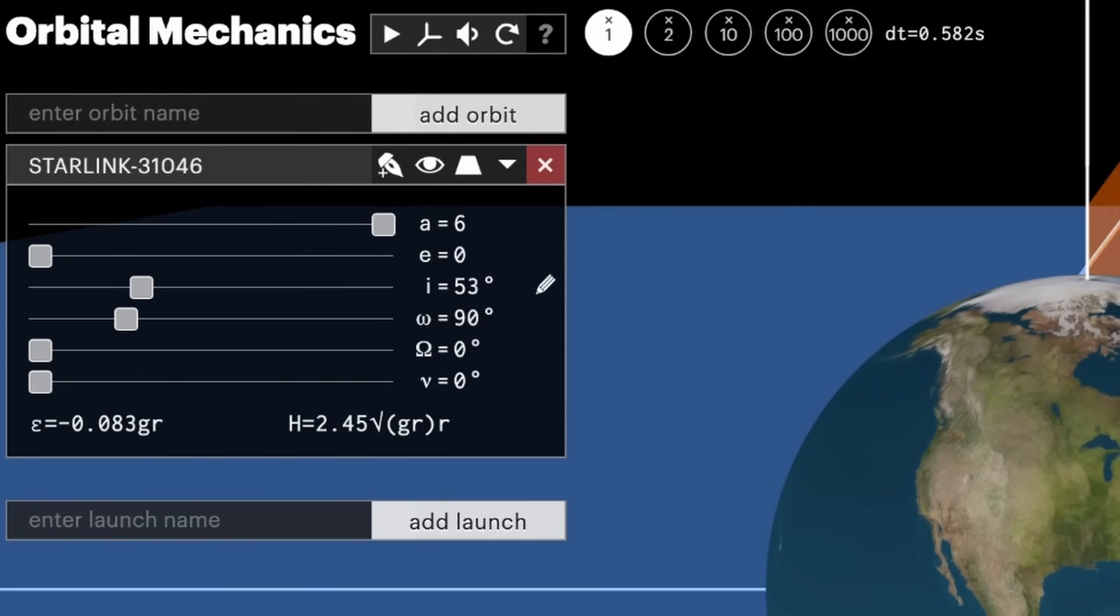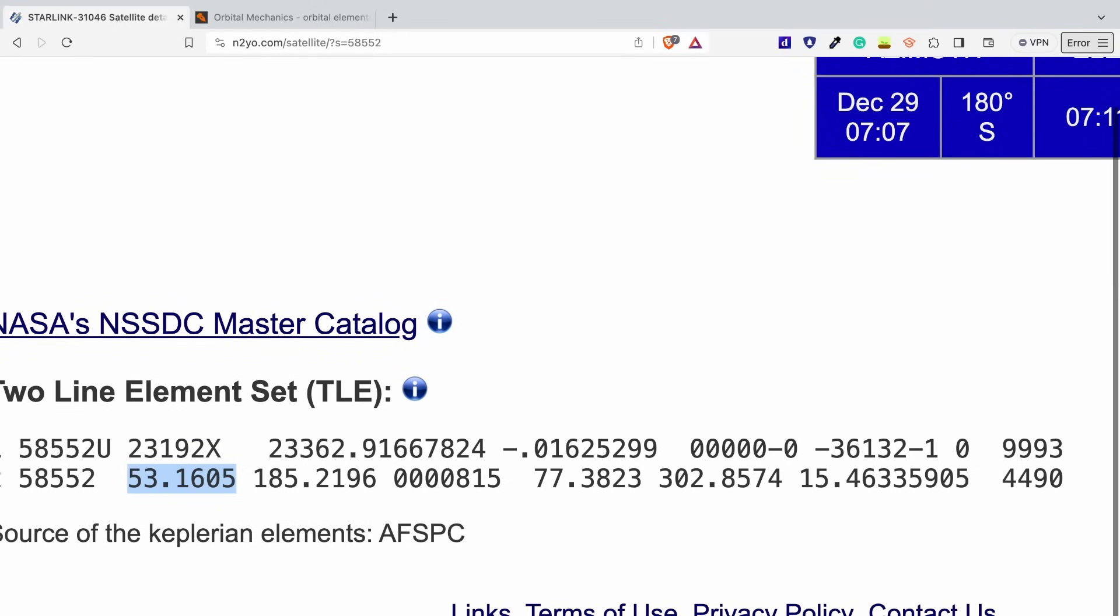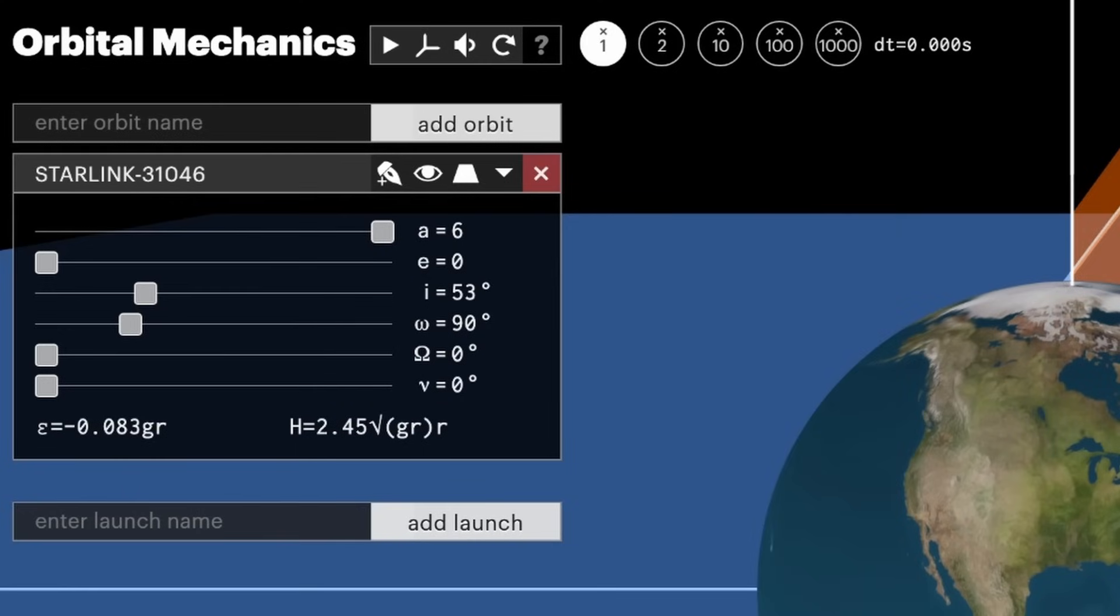Next up, we have the argument of perigee. The argument of perigee on the TLE is right after the eccentricity, so it's right here, and this is 77.3823, so I'm going to round it to 77. I'm going to click this value here, and then hit Enter.